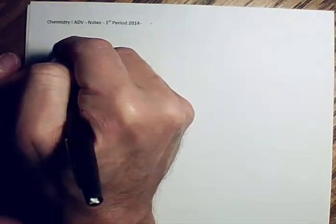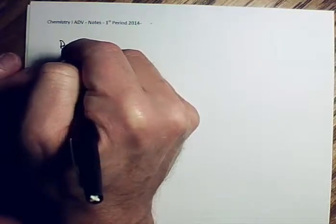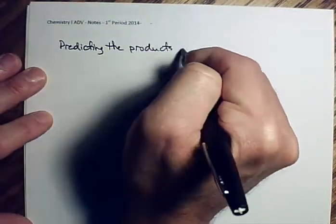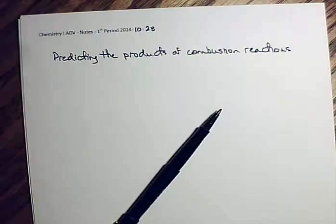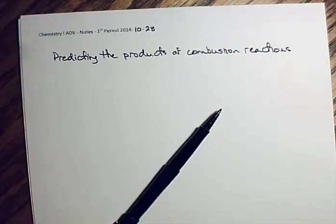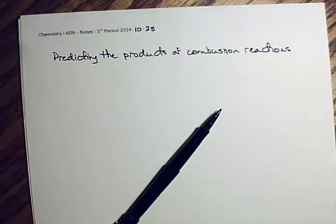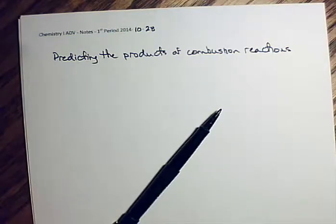We're looking at predicting the products of combustion reactions. Just to remind you, we've covered synthesis reactions — taking two or more chemicals and putting them together. You have to classify those but don't have to predict their products; you just have to balance those equations and in some cases determine the physical state. You should know the basic elemental gases: hydrogen, oxygen, nitrogen, chlorine, and fluorine are all diatomic gases. Bromine is a diatomic liquid.